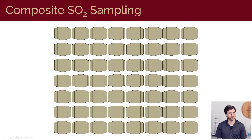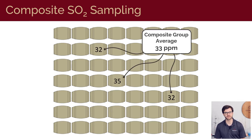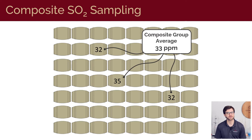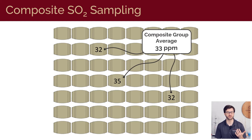In this example, we have 56 barrels of Merlot that have been in barrel for about six months. If we sample three barrels from this group and take a composite of these samples and analyze them for free SO2, we would get a concentration of 33 parts per million, and we essentially assume that that free SO2 level is representative of that entire group.